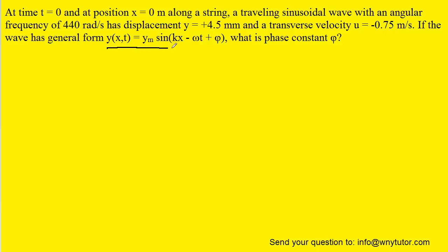In the question, we are given the position function, and the question also gives us the transverse velocity. We know there is a nice connection between the position function and a velocity function. The fact that they're giving us the velocity is a clue that we actually need to take our position function and calculate its derivative.